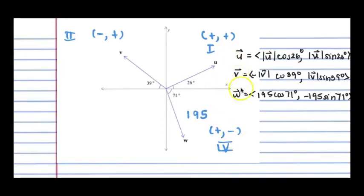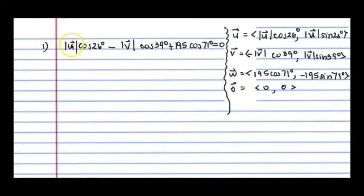Now we know that the sum of these vectors are going to add up to the zero vector, and the zero vector is 0, 0. So therefore the x components are going to add up to zero, and then the y components are going to add up to zero. So we have the following equation. So our first equation, by setting the x components equal to one another, and notice that all of those x components have cosine. So magnitude of u cosine of 26 minus the magnitude of v cosine of 39 plus 195 cosine of 71. Those are all the x components that are going to equal the x component of the zero vector, which is zero.